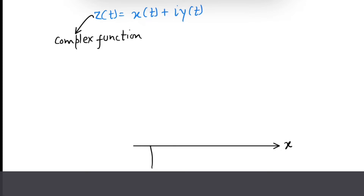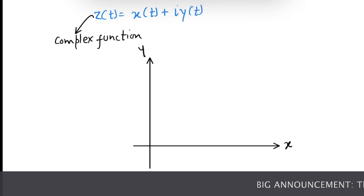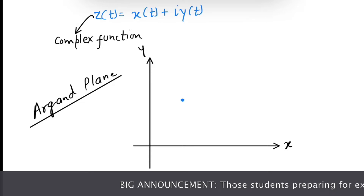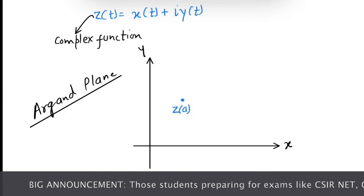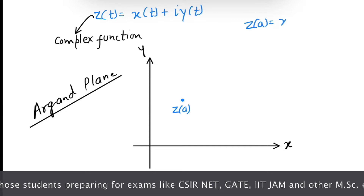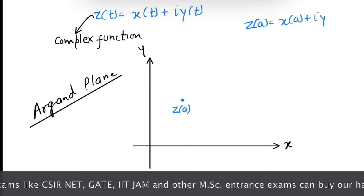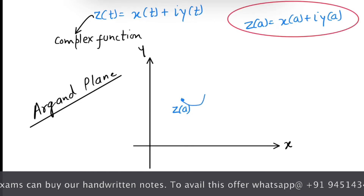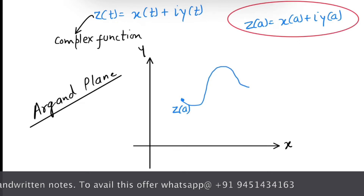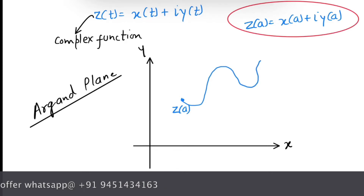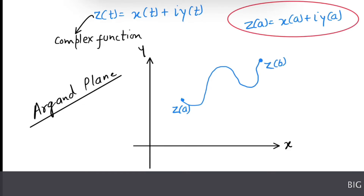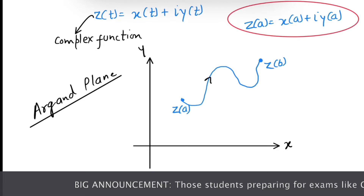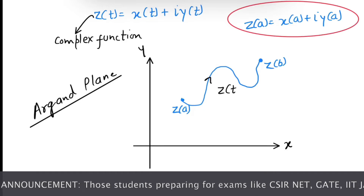On the Argand plane, this is the x-axis and this is the y-axis. Suppose this is the point z(a), that means z(a) = x(a) + i·y(a). As the value of t changes, the value of z(t) also changes, tracing a curve from z(a) to z(b). The orientation of this curve z(t) is from z(a) to z(b).